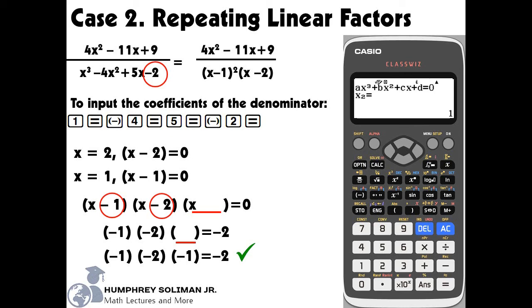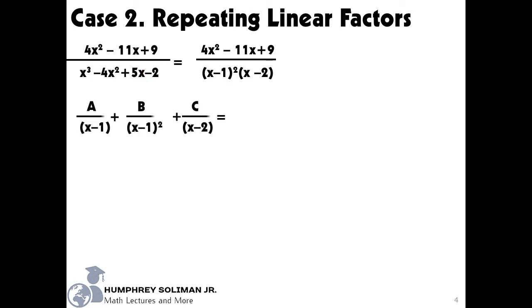Now that we have written our denominator in factored form, we can write a partial fraction for each factor. Also, since x minus 1 is a repeating factor, we need to write its exponent with it when we use it for the second time. This rule will always apply to repeating factors in partial fraction decomposition. We will use the variables A, B, and C as the numerators, since we are still in the process of finding the partial fractions and we don't know those values yet.